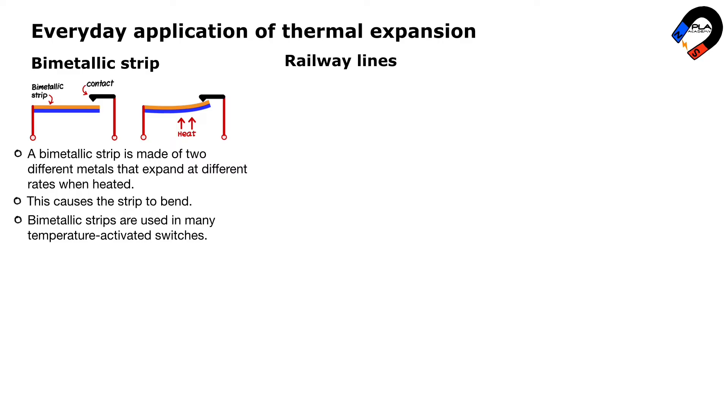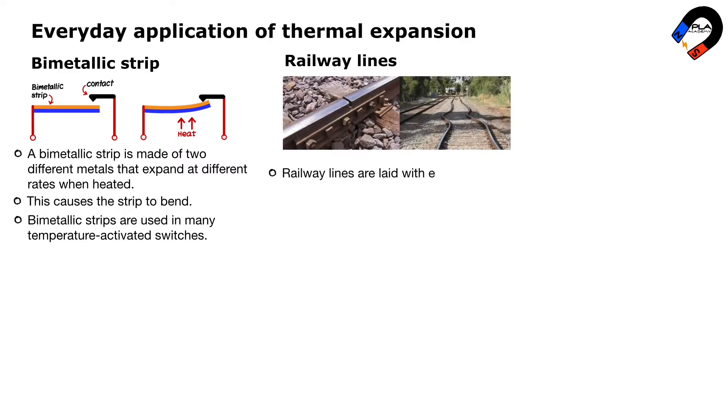Railway lines are laid with expansion gaps to allow for thermal expansion. This prevents the tracks from buckling when they get hot in the summer.